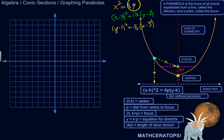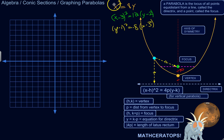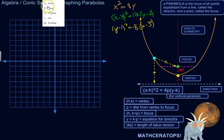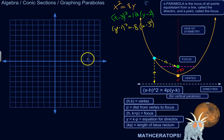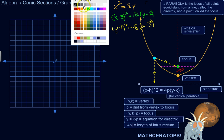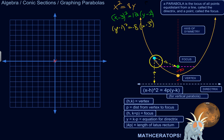We'll start with one that's centered on the origin. You can think of it as x minus 0, y minus 0, so it just turns out to be x squared equals 4p times y. In this one, 4p is 8, so that means p is 2. The vertex is at the origin, and p is the distance from the vertex to the focus.